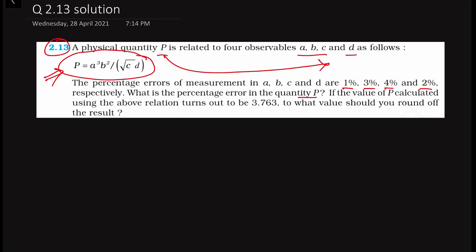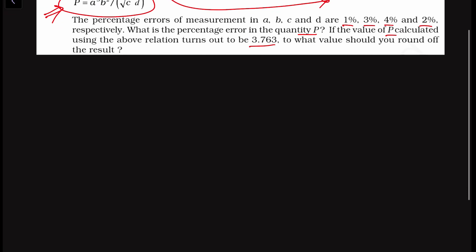If the value of P calculated using the above relation turns out to be 3.763, what value should you round off the result to? For rounding off, you have to look at the percentage value. If the percentage error has two significant figures, you have to round off up to two significant digits. If you have three significant figures, then you round off 3.763 into three significant digits.